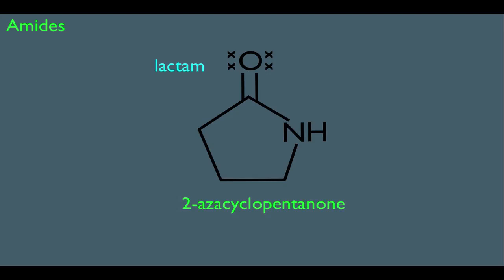Let's break down where this name is coming from. Again, we have a five-membered ring. That's the cyclopenten part. Then, remember on carbon 1, we technically have a ketone-type group. That's the O-N-E part. And then, notice position 2 here is the nitrogen within the ring. That's the 2-aza part.